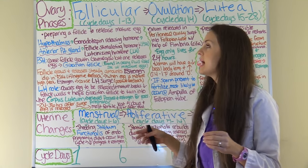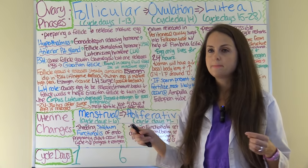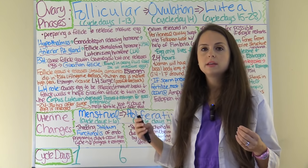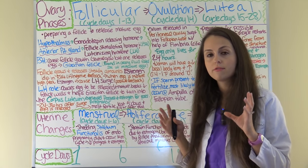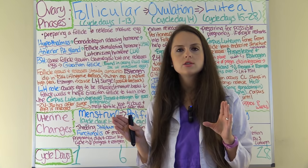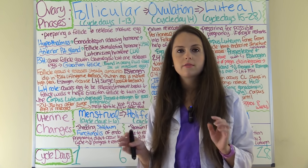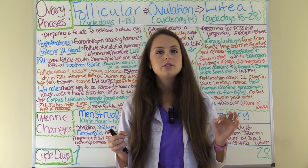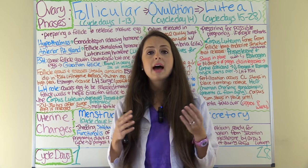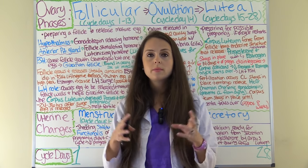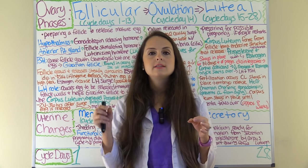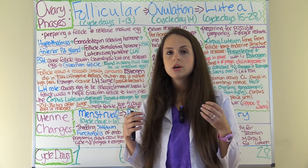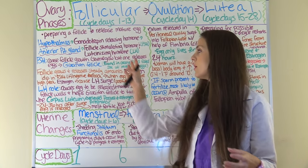The follicular phase happens cycle days 1 through 13. The whole goal of the follicular stage is to prepare a follicle — a mature egg — to be released. You have two ovaries with little fluid-filled sacs containing immature eggs. Your body will release hormones to cause some of those follicles to mature and release during ovulation. Your hypothalamus releases gonadotropin-releasing hormone, which causes the anterior pituitary gland to release follicle-stimulating hormone (FSH) and luteinizing hormone (LH).